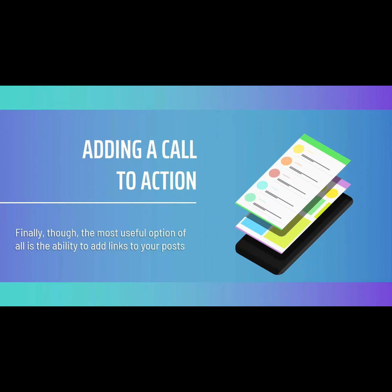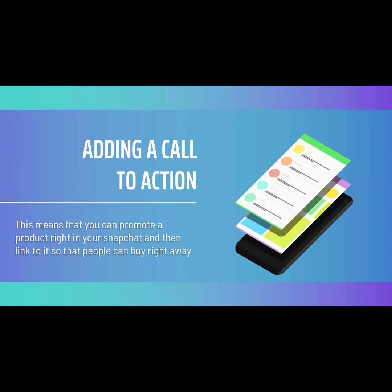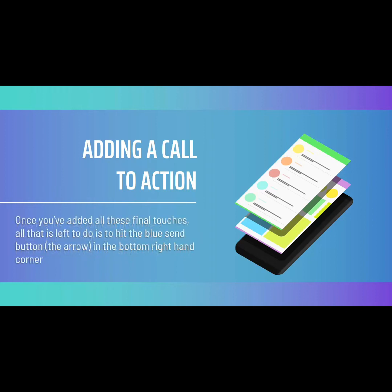Finally, the most useful option of all is the ability to add links to your posts. This is one area in which Snapchat drastically outperforms Instagram. Whereas Instagram requires users to have 10,000 followers or a verified account before they can use links through the swipe-up method, Snapchat lets you add any URL you like right away. This means you can promote a product right in your Snapchat and then link to it so that people can buy right away — an ideal way to convert your Snapchat momentum into sales. Once you've added all your final touches, hit the blue send button in the bottom right. You'll then be prompted to select whether you want to send your story to someone you know or add it to your story.